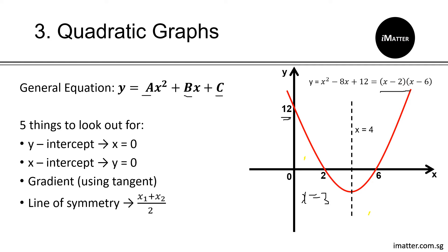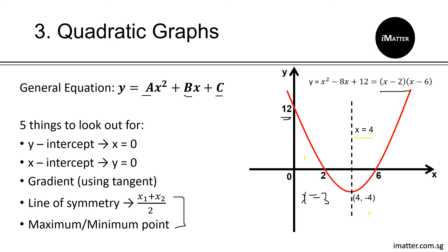Next is to find your line of symmetry, which can be found directly from your x-intercepts — take (2 plus 6) divided by 2 to get a line of symmetry of x equals 4. Lastly, find your maximum or minimum point. For a negative x-squared (sad face) it's a maximum; here we find the minimum. Since the line of symmetry and minimum point are correlated, substitute x equals 4 into the equation to find the y-coordinate, which in this case is negative 4, giving minimum point (4, negative 4).